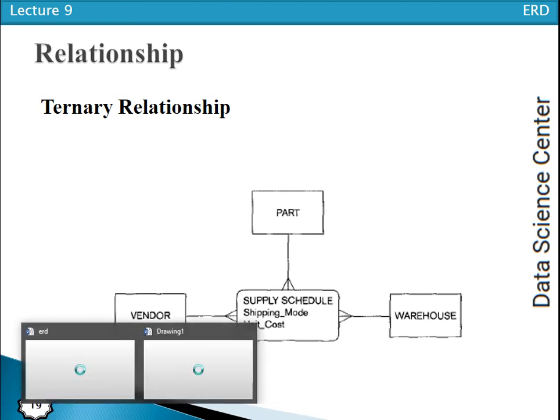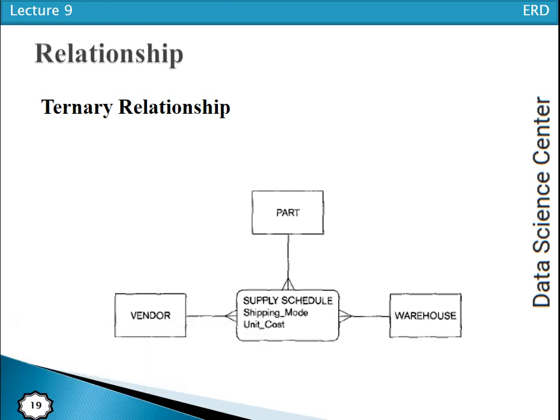Another example is patient, doctor, and drug: a doctor prescribes a drug for a patient. Here we have a relationship among three different entity types. Whenever a relationship exists among three different entity types, that is called a ternary relationship. Thanks for watching my video.